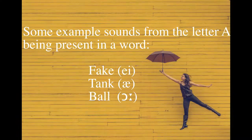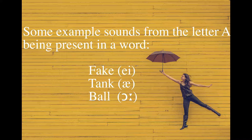As a side note, the examples show the A sound exclusively comes from the letter A in a word. But be aware that the letter A in a word can produce a number of different sounds. For example, fake, tank, and ball are all sounds stemming from the letter A being present in a word.